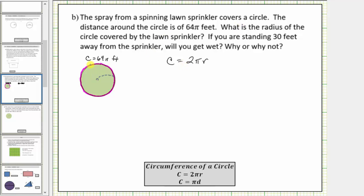And because we know the circumference is equal to sixty-four pi feet, we substitute sixty-four pi feet for C, giving us the equation sixty-four pi feet equals two pi r. And now we need to solve this equation for r.